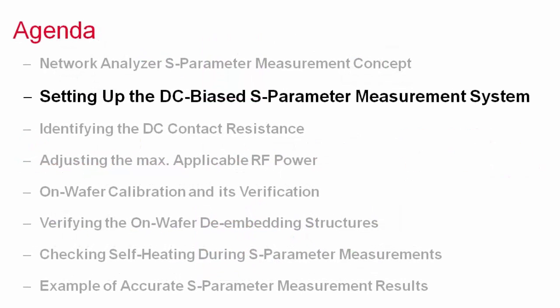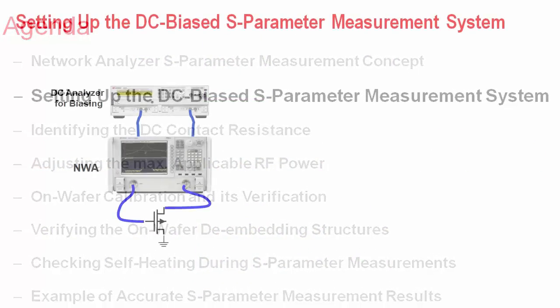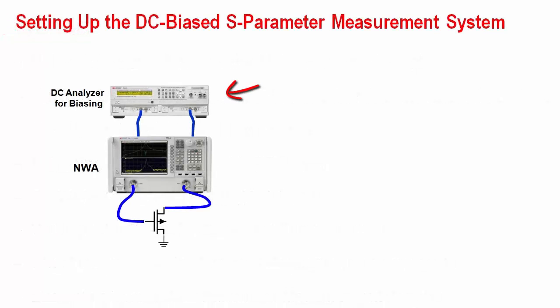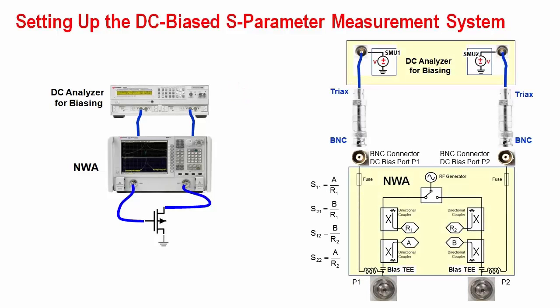Let's now discuss an S-parameter system for transistor measurements. Usually, a DC analyzer is applied because of its superior measurement resolution. It is connected to the bias connectors at the backside of the network analyzer.